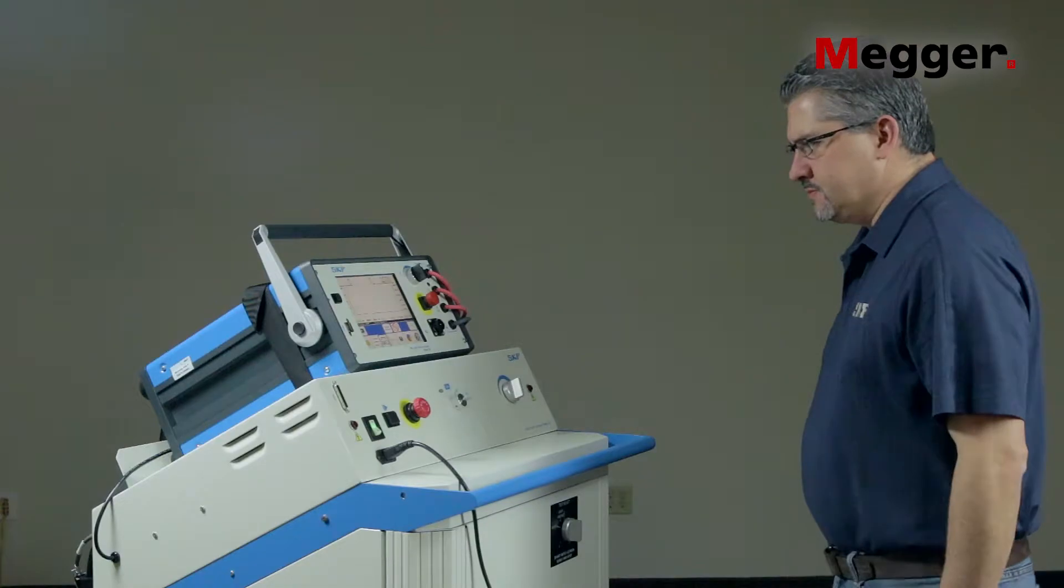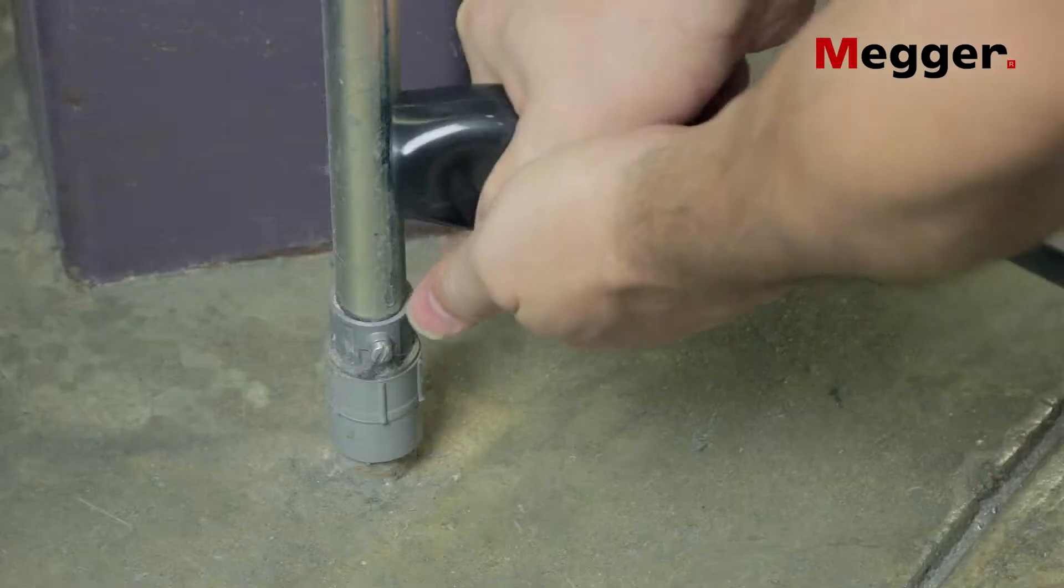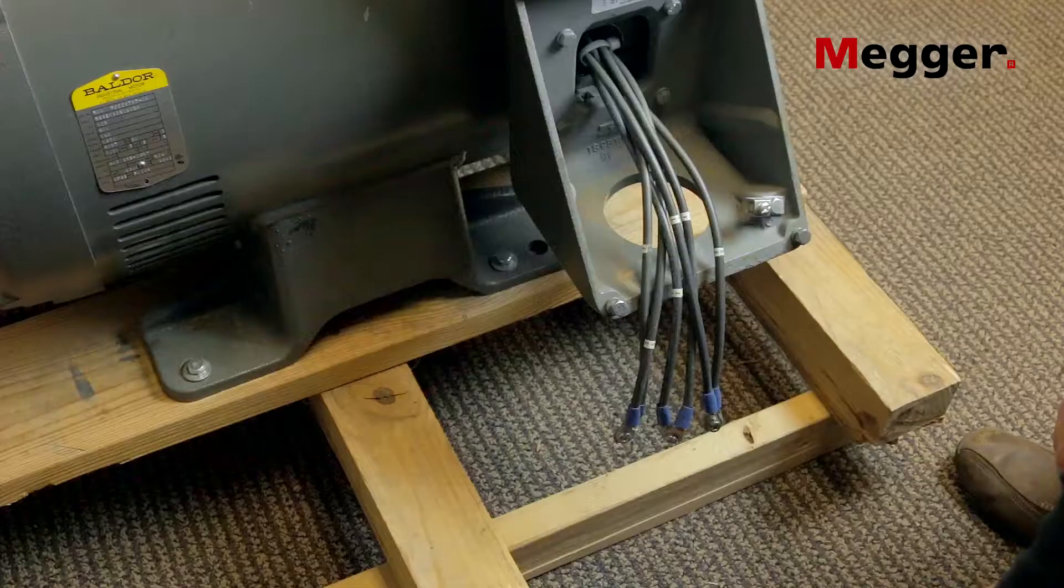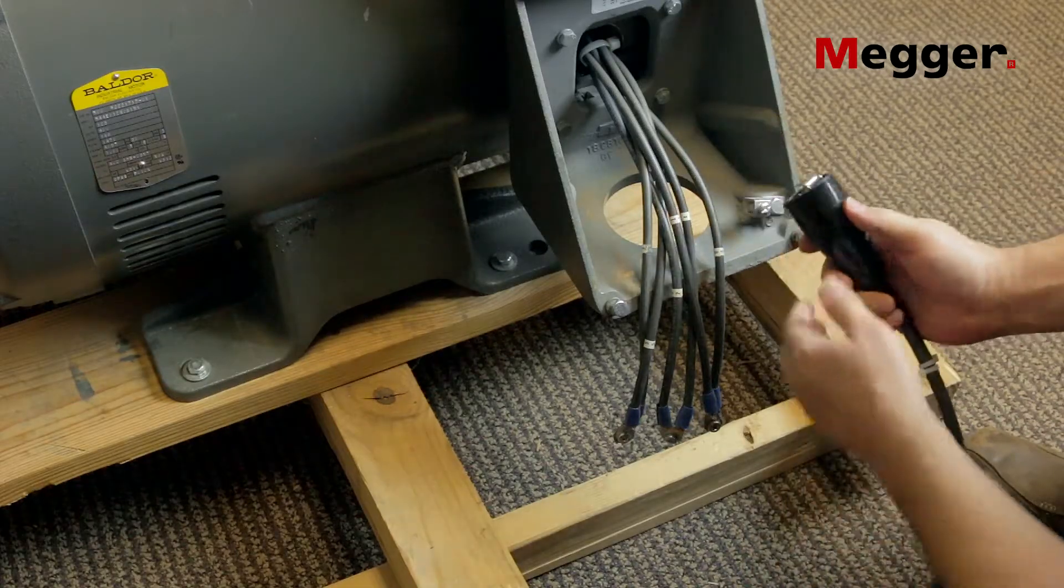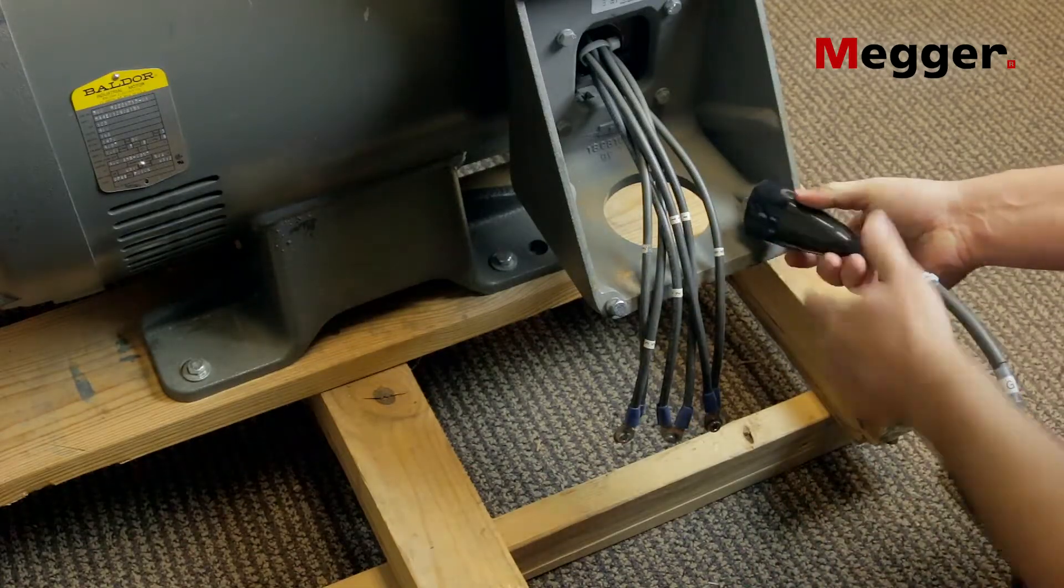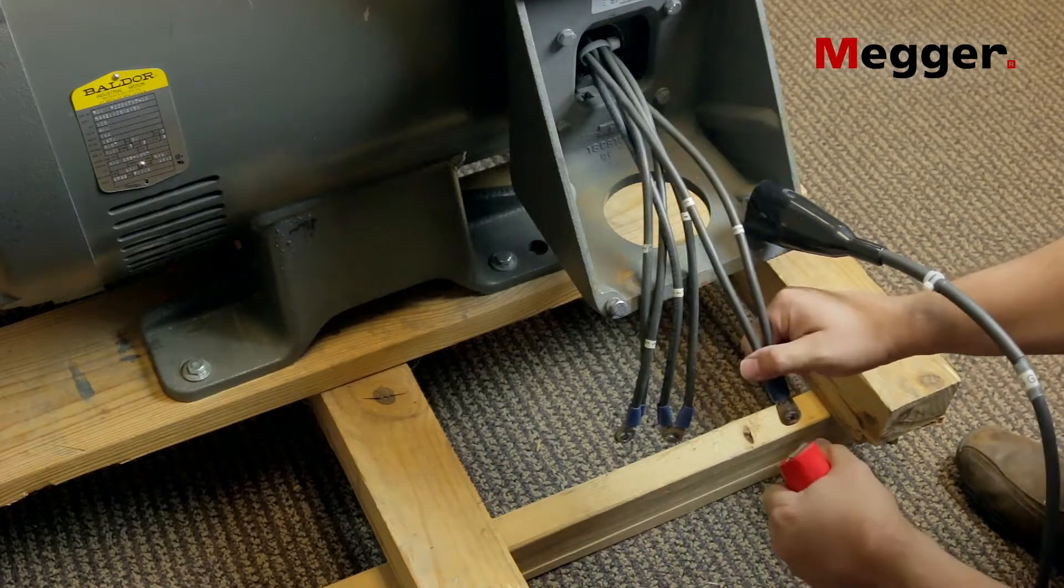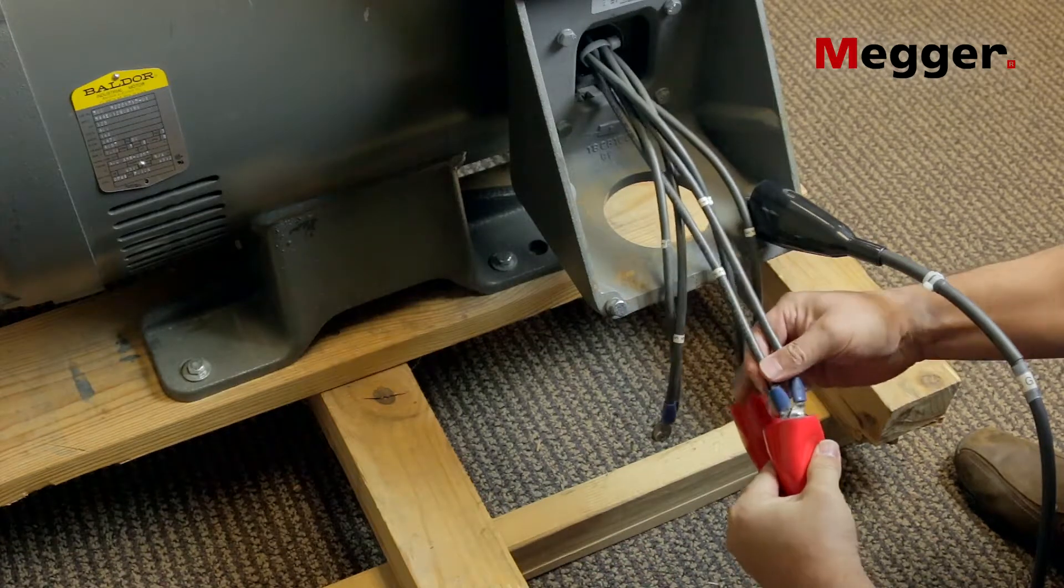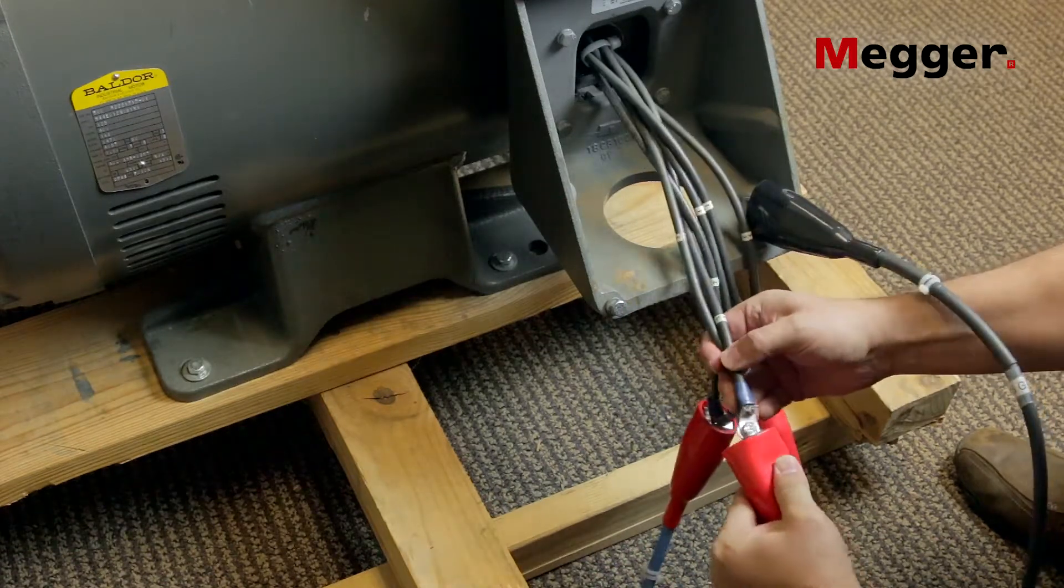This video assumes you have already connected the Baker DX to the power pack. Connect the braided ground cable to a known earth ground point. Connect the test leads to the motor stator terminals and the ground lead to a paint-free point on the motor's frame.